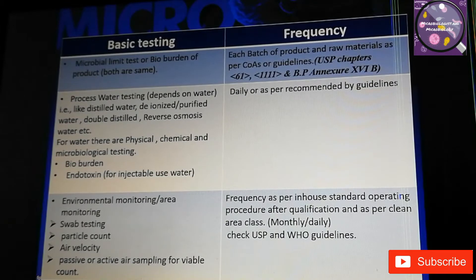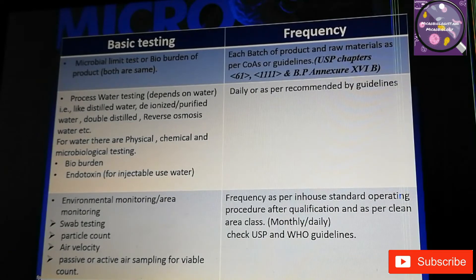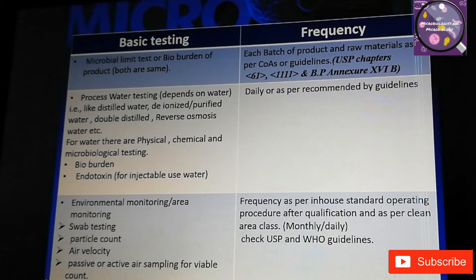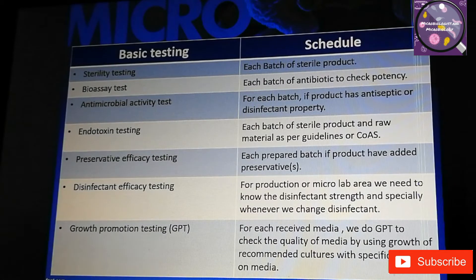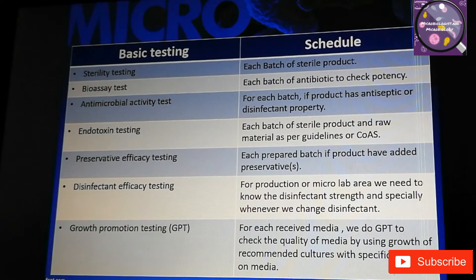Other tests done in pharmaceutical or medical device industries include sterility testing, with frequency scheduled for each batch of a sterile product. Another one is the bioassay test, done for each batch of an antibiotic to check potency. Next is the antimicrobial activity test, performed if the product has antiseptic or disinfectant properties.